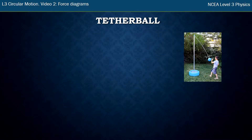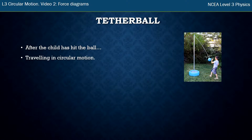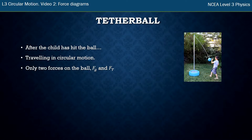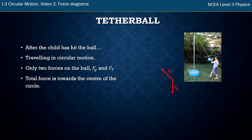The other situation is tetherball, which works out very similar except without a normal force — it has a string, so there's a tension force instead. After the child hits the ball and the hand is no longer in contact, it travels in circular motion. There are only two forces on the ball: a downward gravity force and a tension force. Gravity is a non-contact force, and the only thing touching the ball is the string. Drawing those two forces out, the total force is again towards the center of the circle. Adding them up gives a very similar looking triangle — the only difference is that instead of a normal force, we have a tension force. We'll see you in the next video.